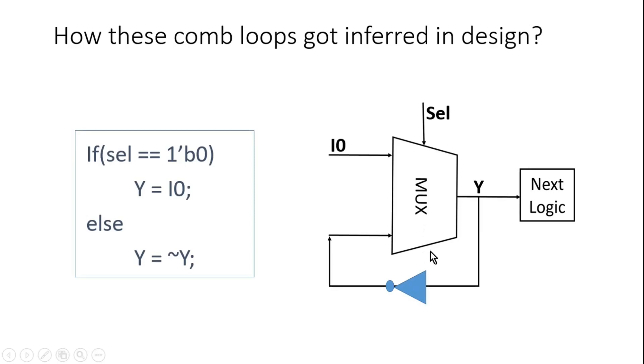Just for your information, these combinational loops are very dangerous because they cause a race condition. Now just assume that the output value of this y is 0 at one particular point of time and select line is 1. So negative of this y will be 1.